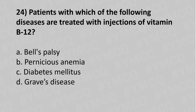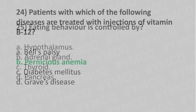Now let's move to question number twenty-four: Patients with which of the following diseases are treated with injections of vitamin B12? Option A: Bell's palsy. Option B: pernicious anemia. Option C: diabetes mellitus. Option D: Graves' disease. The answer is Option B: pernicious anemia.